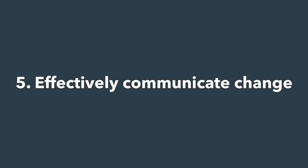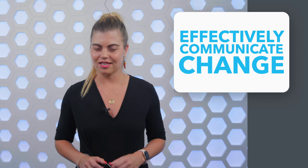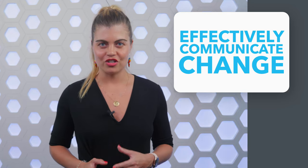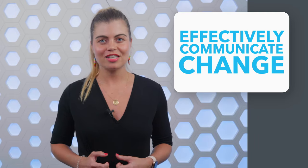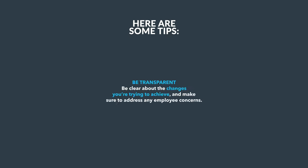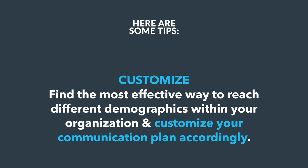Step 5: Effectively communicate change. There is nothing more powerful than clear, honest, and consistent communication. This type of communication builds trust and engages employees in the process. Here are some tips: be transparent, be clear about the changes you're trying to achieve, and make sure to address any employee concerns.